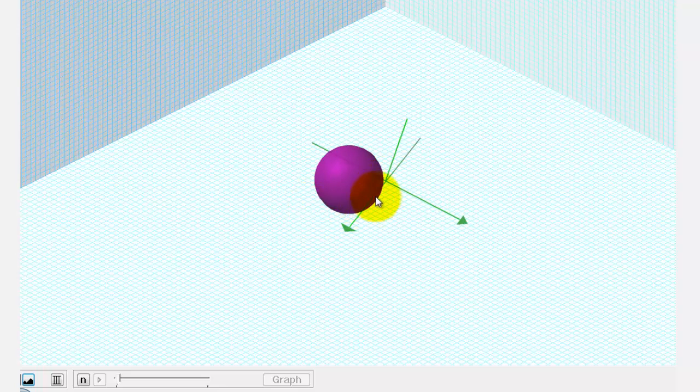And since this is the positive x-axis, we can tell the center has a positive x-coordinate. This axis back here would be the negative y-axis, so the y-coordinate of the center would be negative. And this is the positive z-axis, so the z-coordinate of the center would be positive.